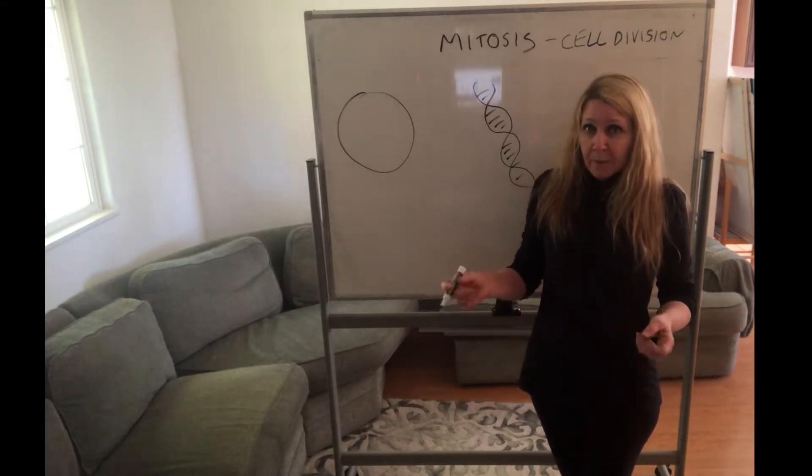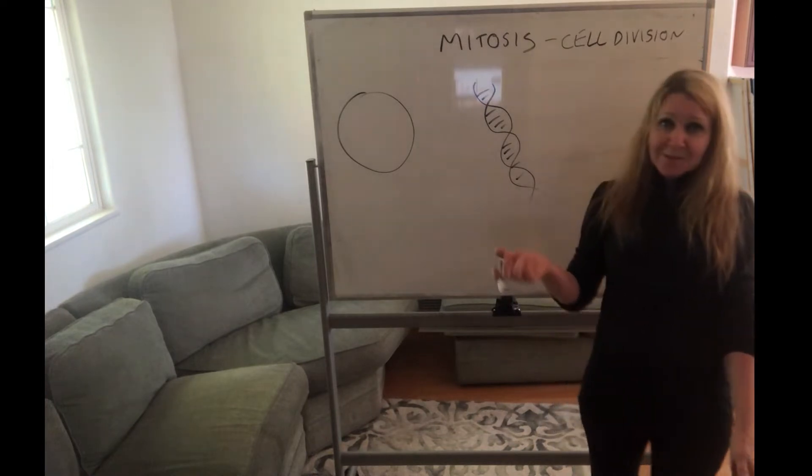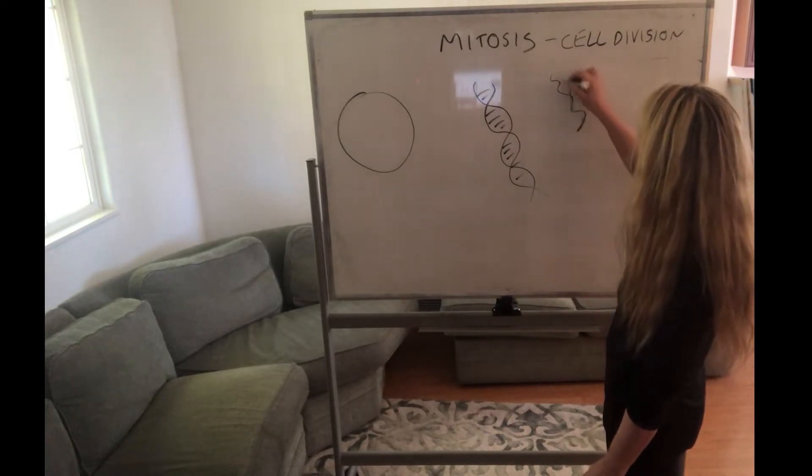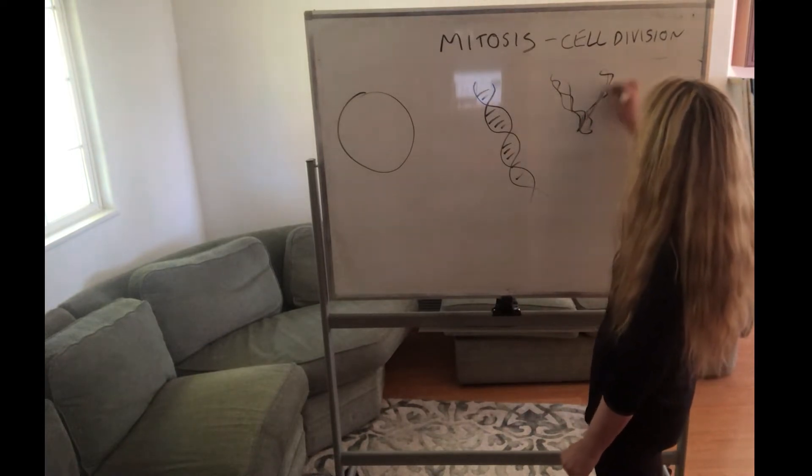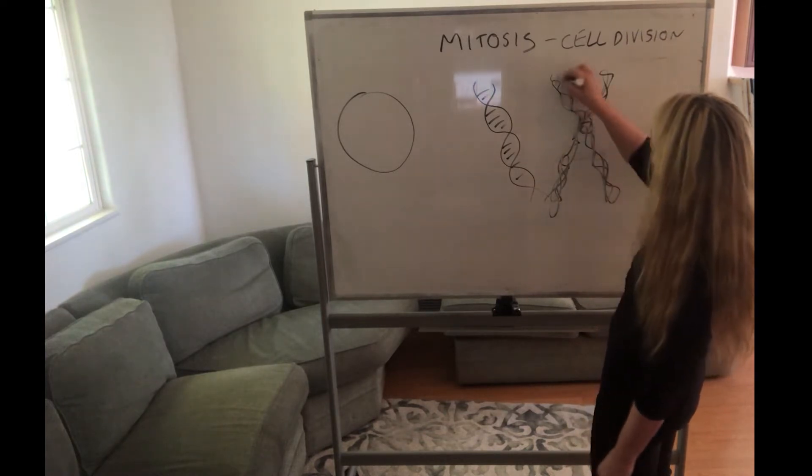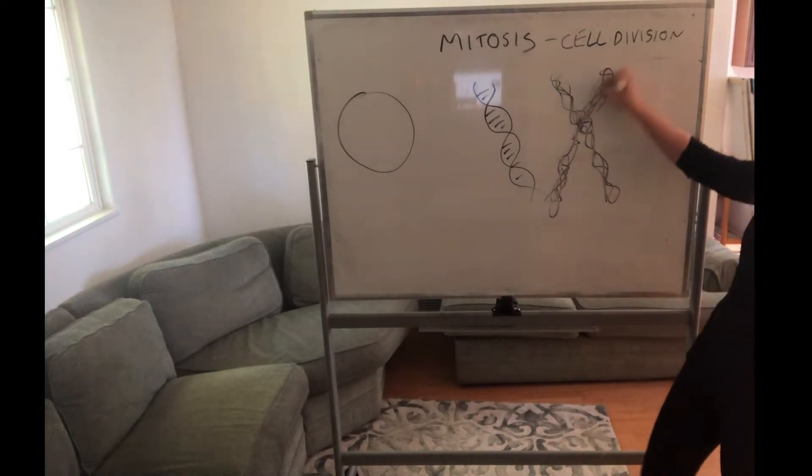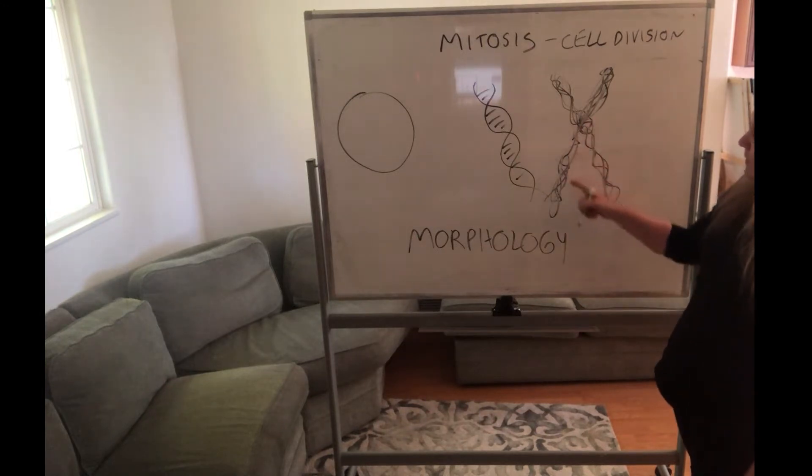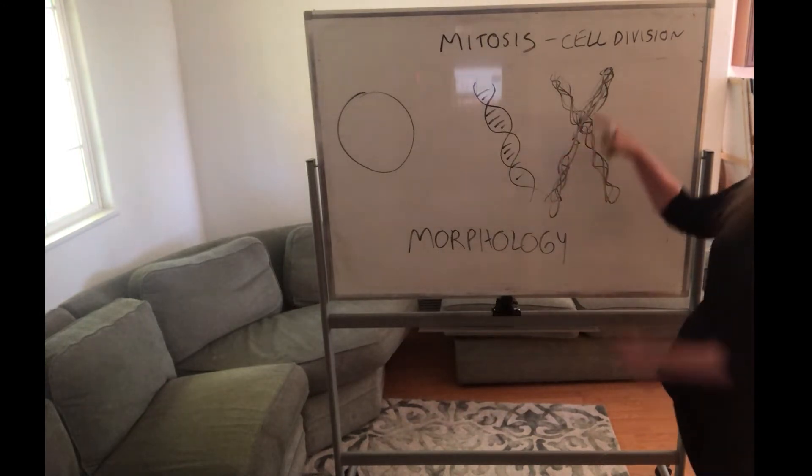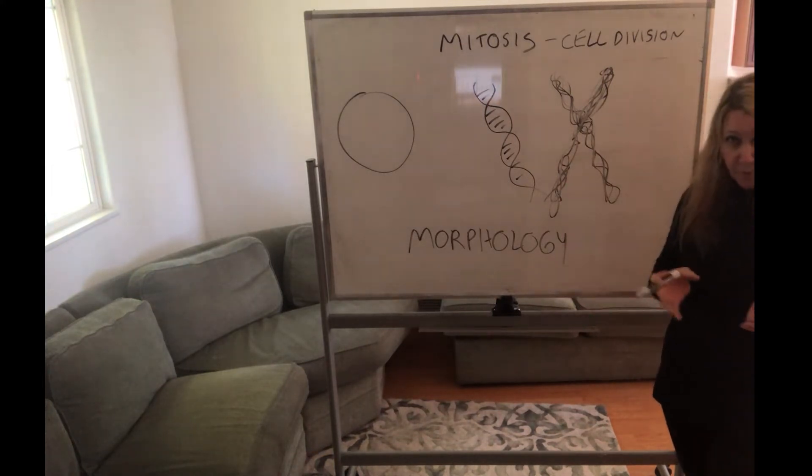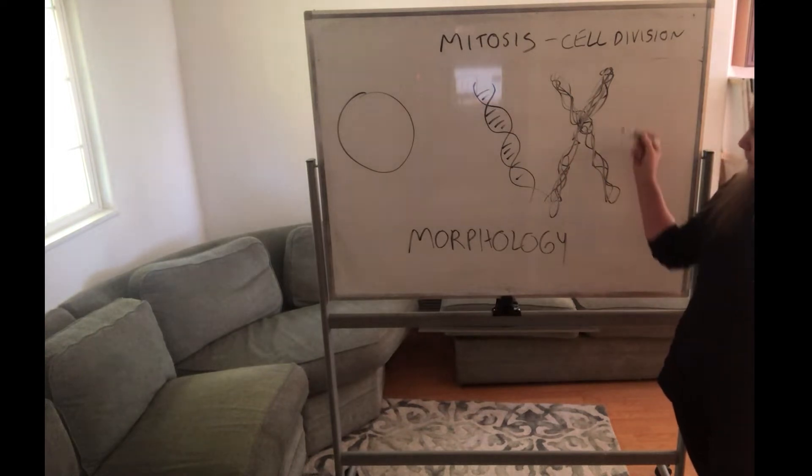But before cell division, before cells divide, that DNA has got to be condensed so it can be divided. So it's condensed into what are called chromosomes. All of this DNA forms these chromosomes. Remember, they take on an X morphology—morphology is the study of the form or shape. They look like this, all this DNA. Obviously, if it's a Y chromosome, we're looking at non-sex chromosomes in this case.